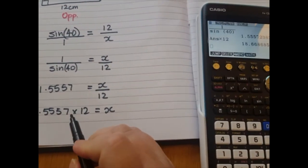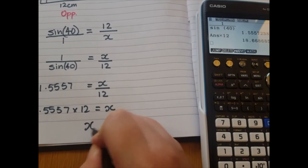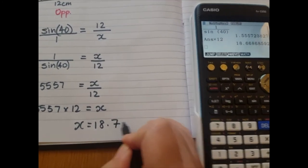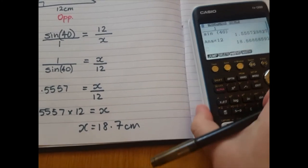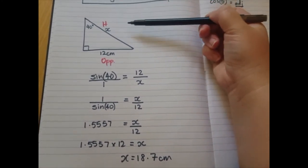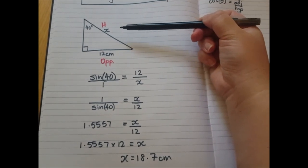So let's round it off. x is 18.7 centimeters. So there it is. Our hypotenuse was 18.7.